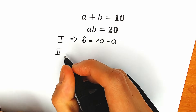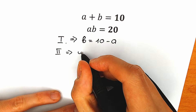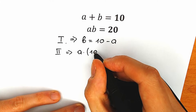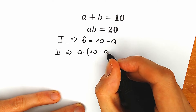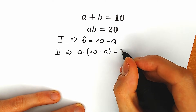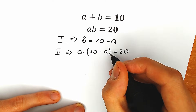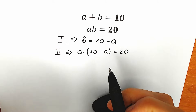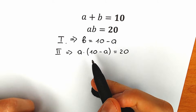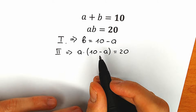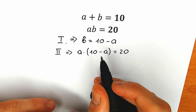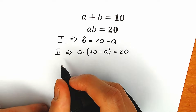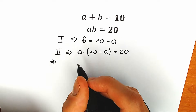So we have the second equation: a times (10 minus a) equal to 20. This is our equation. Right now we have only one variable — we have only a. So let's simplify that. Let's try to solve this equation for a. It looks like this is a quadratic equation, but let's see.